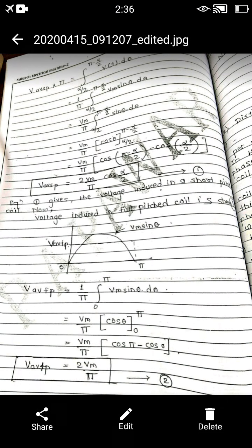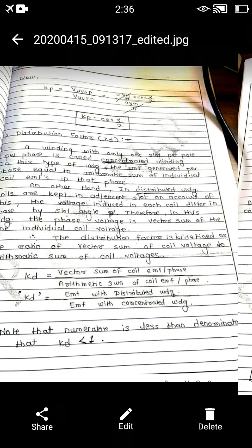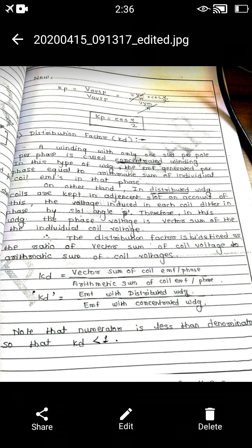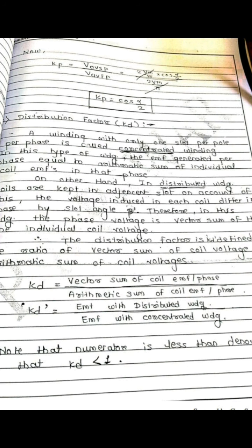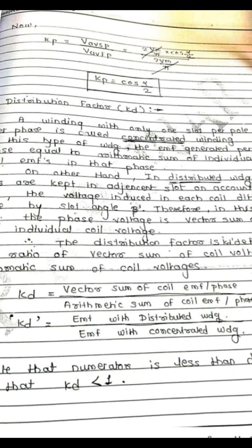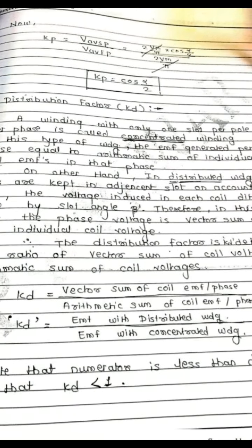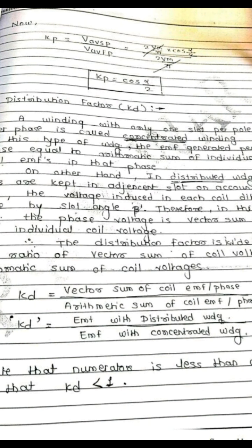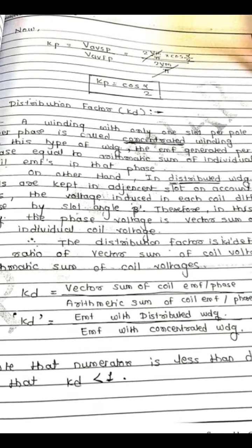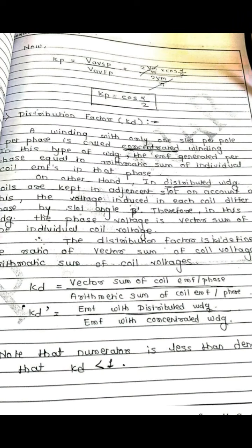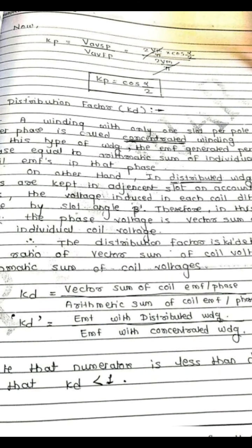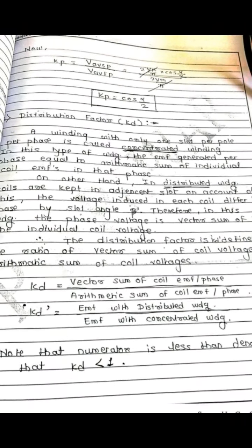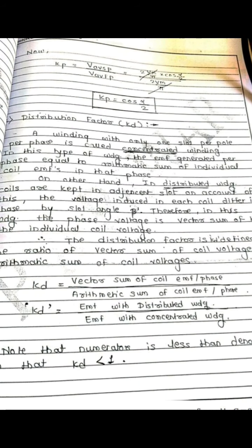Now we have both expressions: Vavsp = 2Vm/pi × cos(alpha/2) and Vav_fp = 2Vm/pi. Using the fundamental formula Kp = voltage for short pitch / voltage for full pitch, substituting the values: Kp = (2Vm/pi × cos(alpha/2)) / (2Vm/pi). The 2Vm/pi terms cancel, and we get Kp = cos(alpha/2), where alpha is the short pitch angle. This is the first winding factor, called the pitch factor.